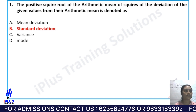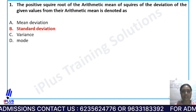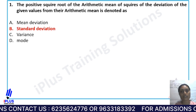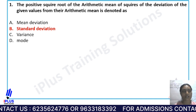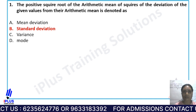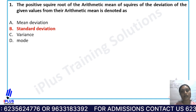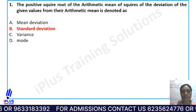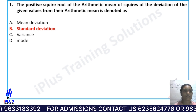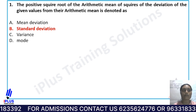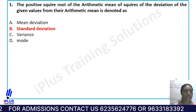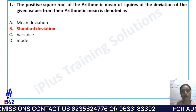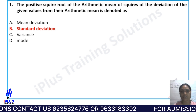The right answer here is Option B, standard deviation. Standard deviation is a measure of dispersion. Standard deviation is the positive square root of the arithmetic mean of squares of the deviation of the given values from their arithmetic mean.